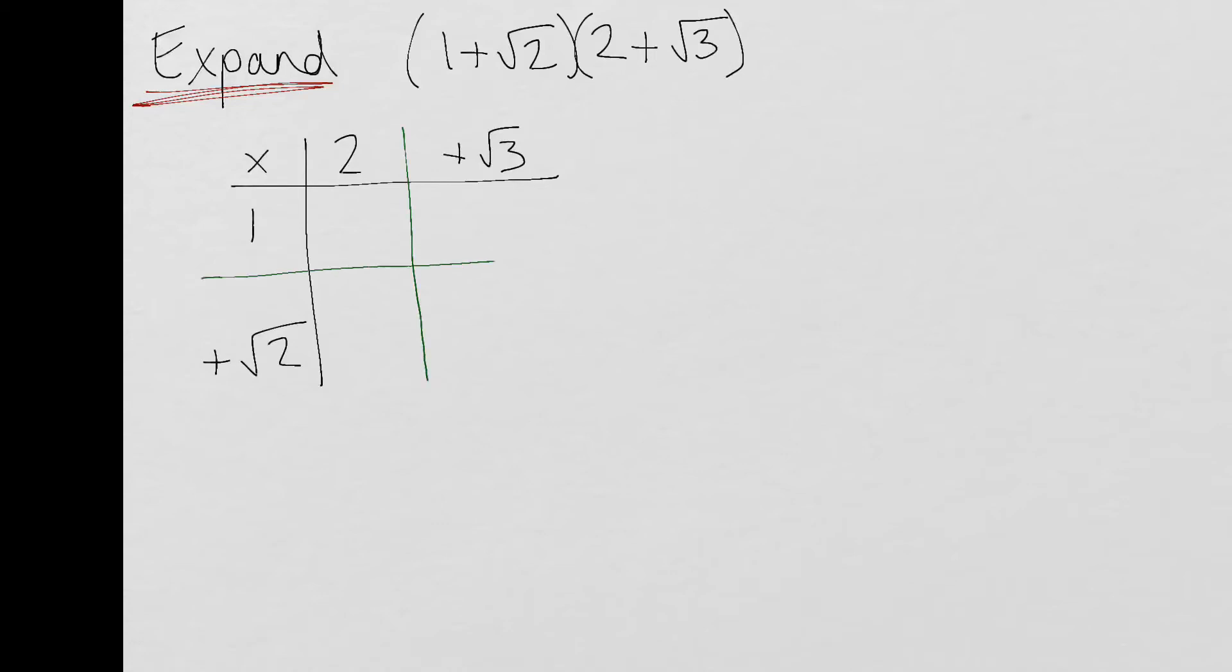And we're going to multiply out these brackets now. So 1 times by 2 is 2. 1 times by positive √3 is a positive √3. 2 times by positive √2 is a positive 2√2. And finally √2 times by √3 is going to give me √6. Now unlike the last one when I start to write this out, I'm going to have 2 plus √3 plus 2√2 plus √6. There is no simplifying that can take place here.